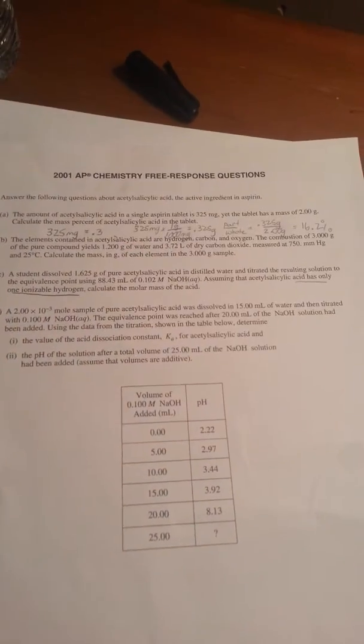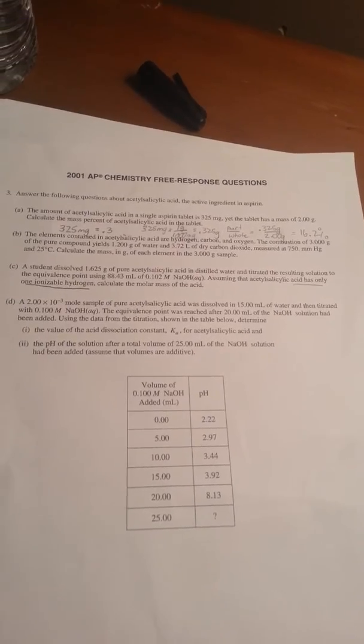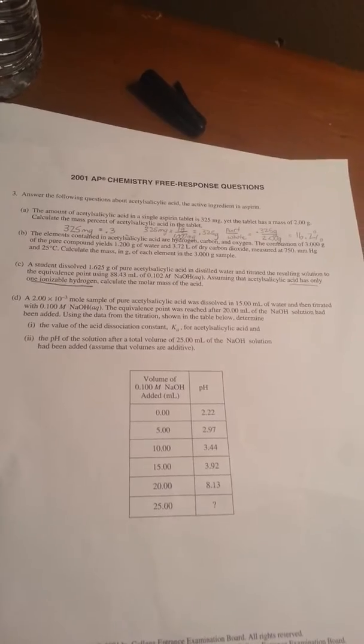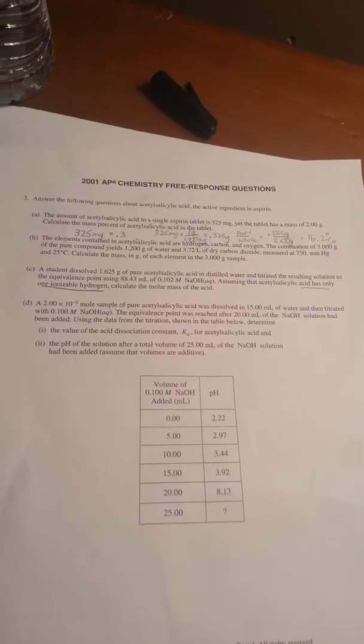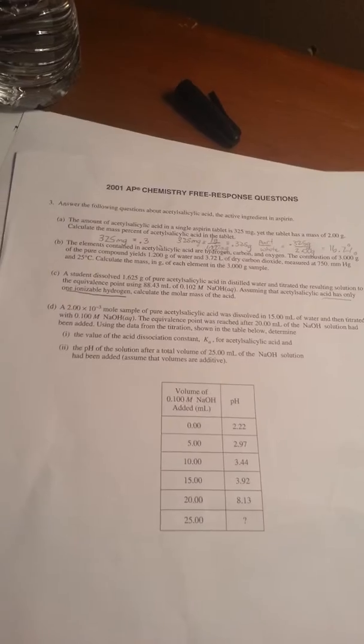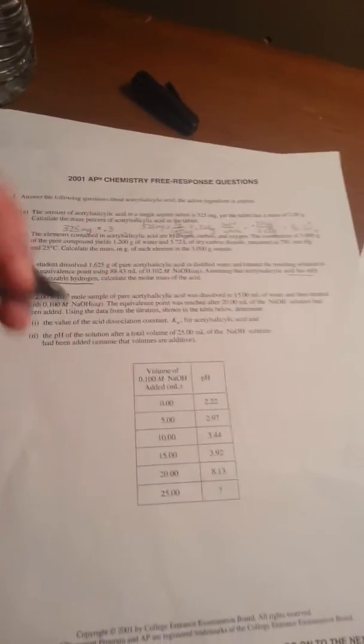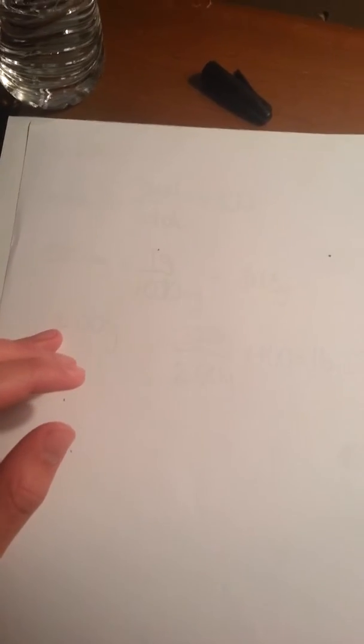Part D: A 2.00 times 10 to the negative third mole sample of pure acetylsalicylic acid was dissolved in 15 milliliters of water and then titrated with 0.1 molar NaOH. The equivalence point was reached after 20 milliliters of the NaOH solution had been added. Using the data from the titration shown in the table, determine the value of the acid dissociation constant Ka for the acid. By rule of thumb, we know that during titration, the pKa equals the pH halfway to the equivalence point.